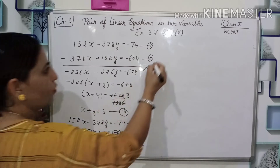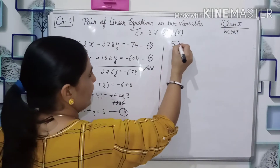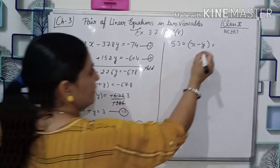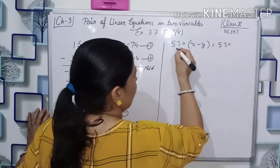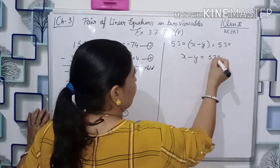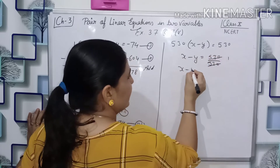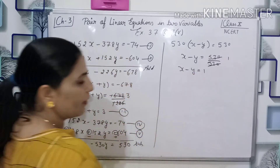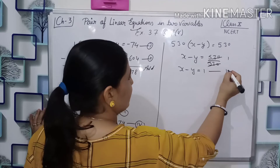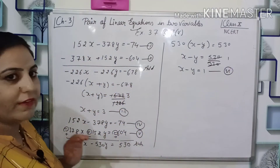Taking 530 as common from the left side, we get 530 times (x minus y) equals 530. Dividing both sides by 530, it cancels out and we get x minus y equals 1. This is our second new simplified equation.